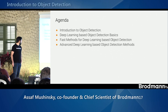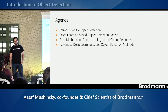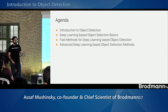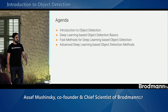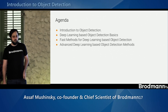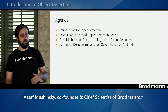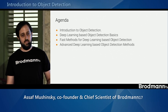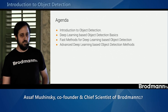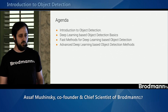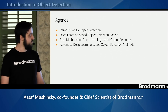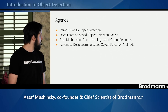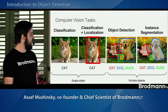What we will talk about today is object detection. We're going to start with an introduction to what exactly object detection is, a little bit of history, how do you evaluate object detection. Then we're going to continue with object detection using deep learning, switch to more advanced faster methods, and finally more recent work that built on those basics.